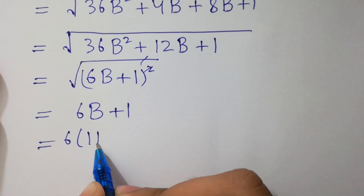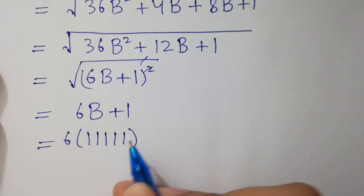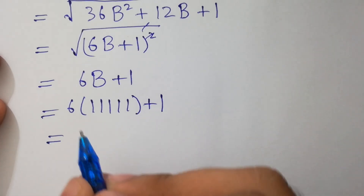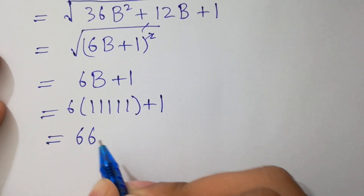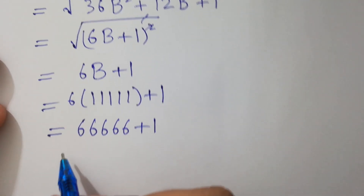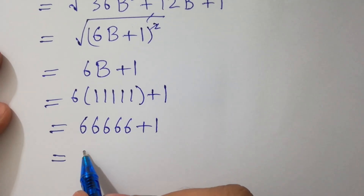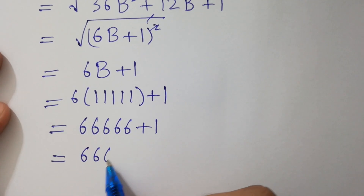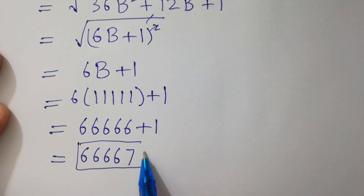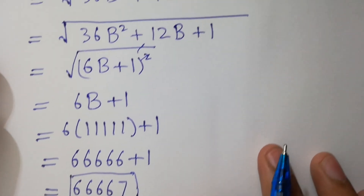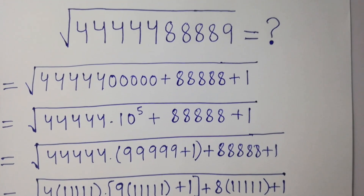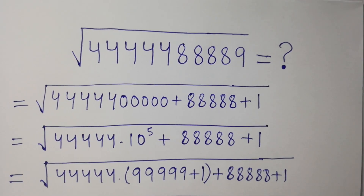So we get 6 times 10^5 plus 1, which equals 6 times 10^5 plus 1, giving us the correct answer. Thanks for watching this video. Please subscribe to this channel to get notifications of new videos. Goodbye!